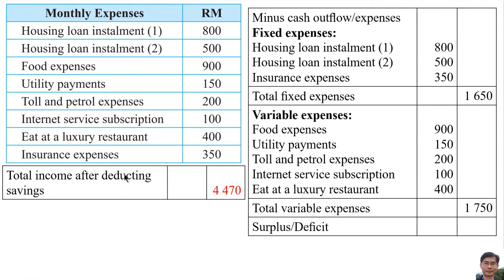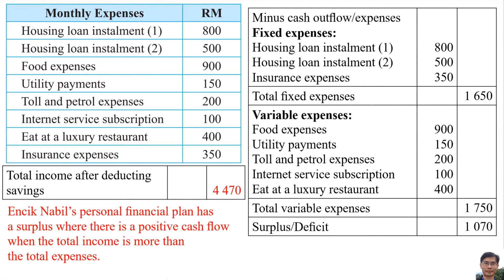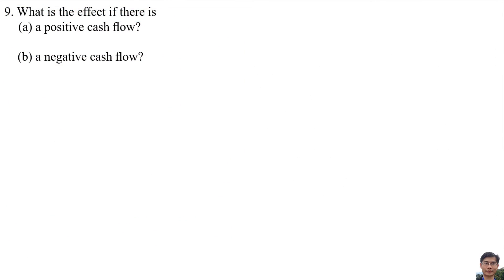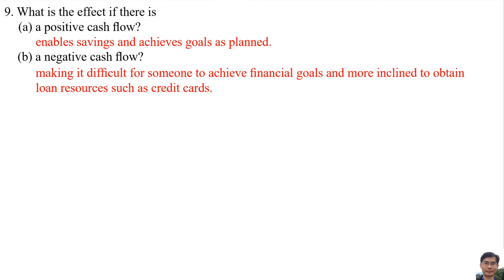The total income after deducting savings is RM4,470. To find the surplus: RM4,470 minus RM1,650 minus RM1,750 equals RM1,070. Injik Nabil's personal financial plan has a surplus, indicating a positive cash flow where total income exceeds total expenses. A positive cash flow enables savings and helps achieve goals as planned, whereas a negative cash flow makes it difficult to achieve financial goals and leads to reliance on credit cards or loans.